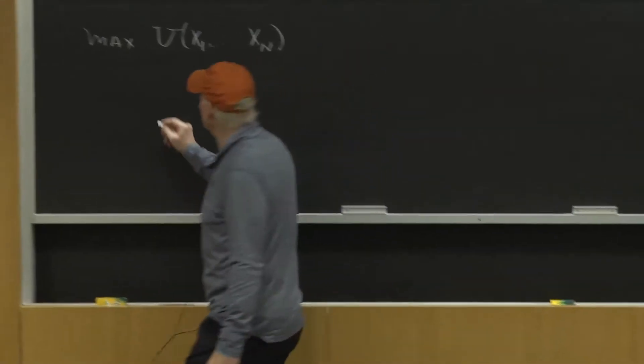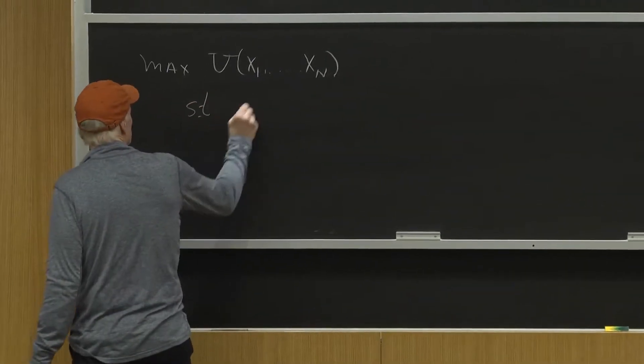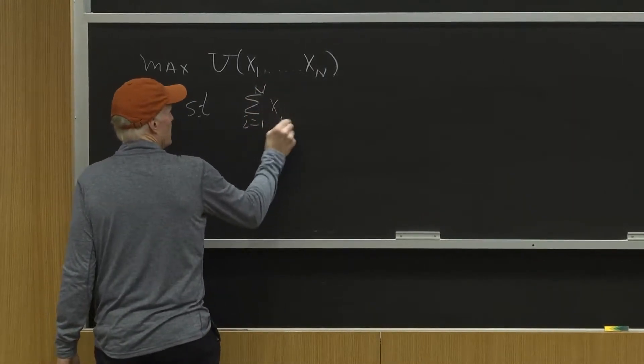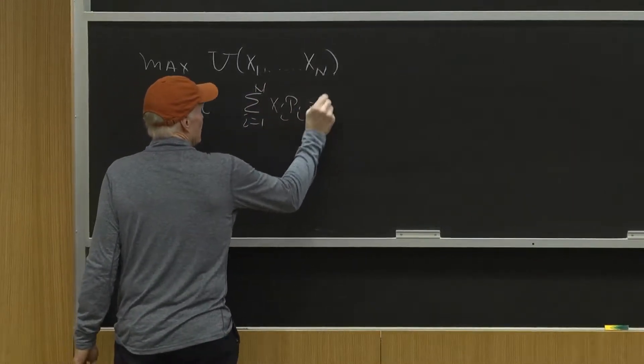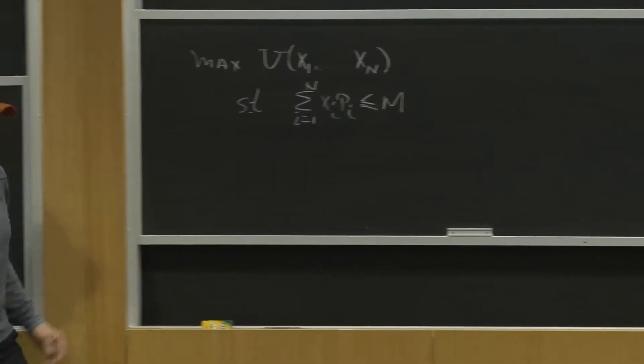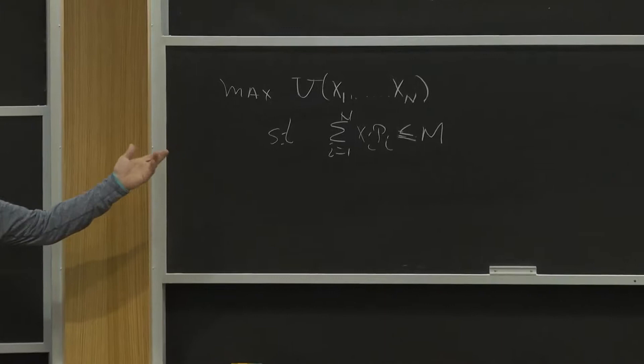We want to maximize utility subject to a budget constraint. The most common budget constraint is the linear one I wrote down last time, which comes out of a market economy where you can buy as much or as little as you want at given prices.